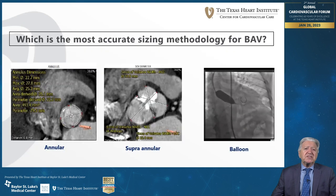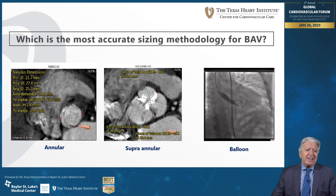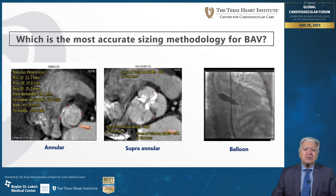There are several known unfavorable features for bicuspid aortic valve when considering TAVR, including a more elliptical annulus and frequent asymmetrical calcification. There is also a significant challenge as far as measurements and methodologies are concerned. What is the more accurate measurement — annular, supraannular, or using a sizing balloon as shown on the right-hand side?